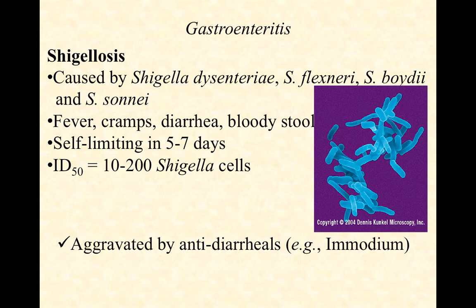Blood in the stool doesn't look red as you'd expect — it tends to turn black as hemoglobin gets processed moving through the intestinal tract. So when your patient says they haven't seen blood but the stool is really black and mucousy, that's the bloody stool you're looking for. You can narrow it down often to Shigella or E. coli, though you'll need more information to confirm.